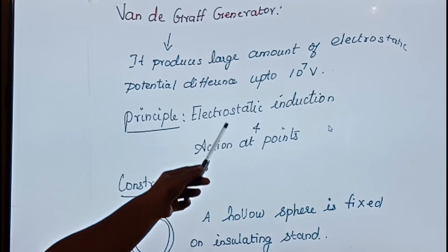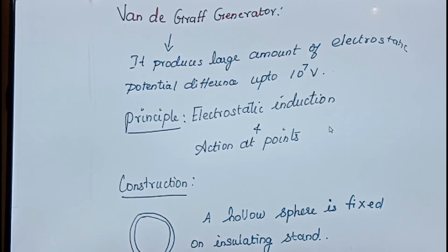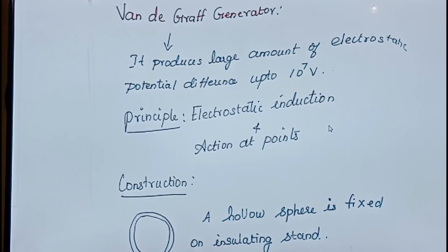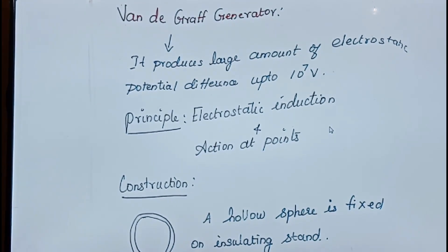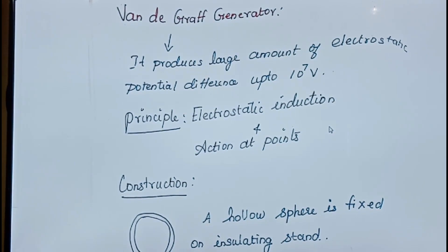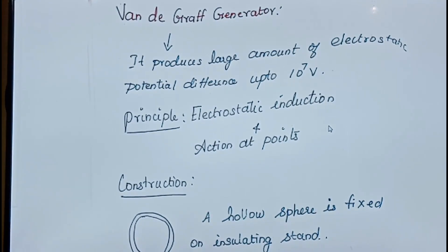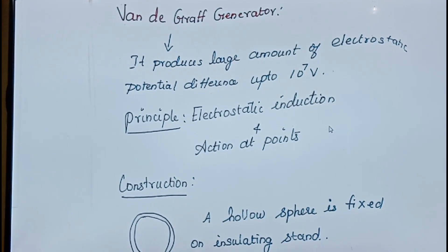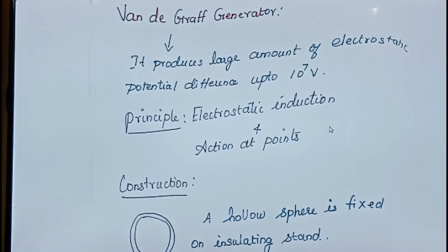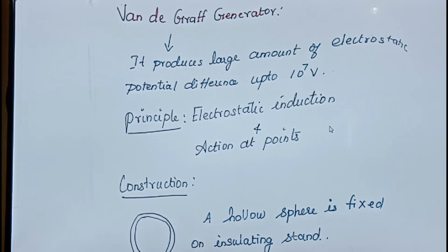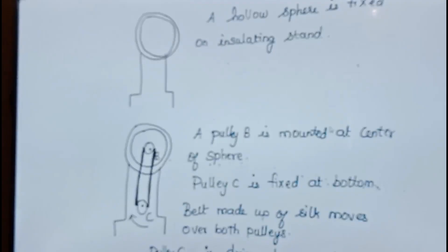Next is the principle. What is it based on? It is based on electrostatic induction and action at sharp points. Electrostatic induction means one charge can charge another object without having direct contact with it. Action at sharp points refers to the leakage of charges from sharp points, as discussed in our last class. These are the two principles on which the Van de Graaff generator works.